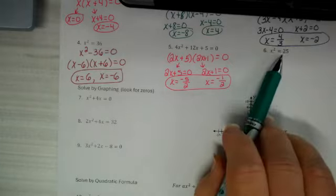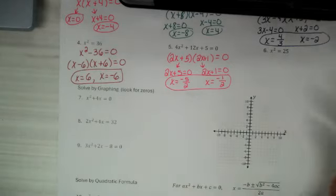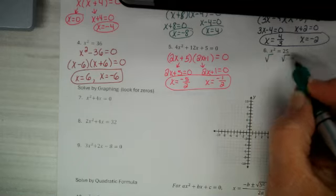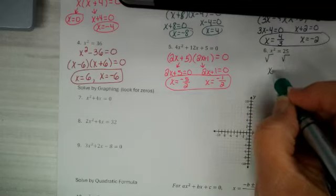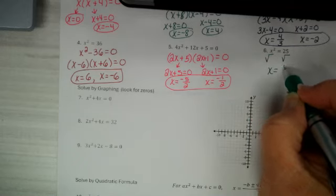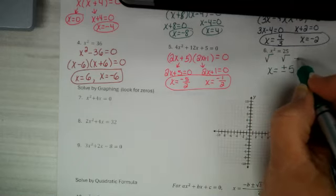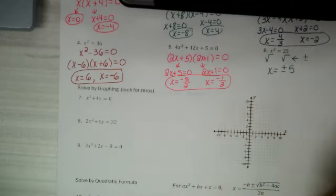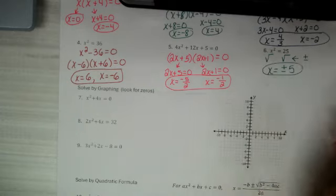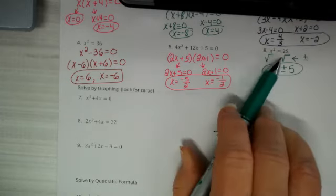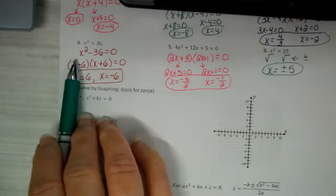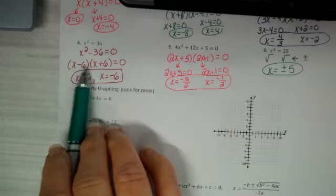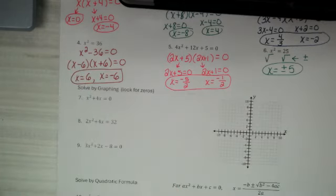Number six looks just like number four. If you really wanted to, you could take the square root of both sides — but you just have to remember, if you draw the square root, you have to put a plus or minus. If you want to do number six just like number four, you can: make it equal zero and factor it using a difference of squares.